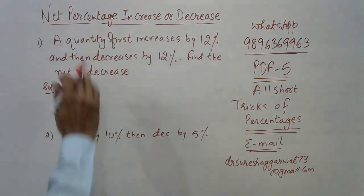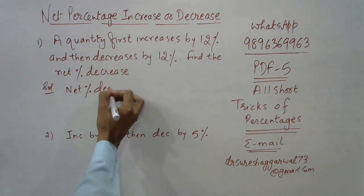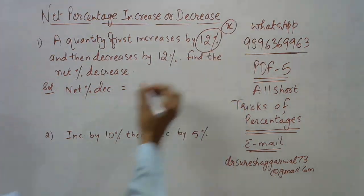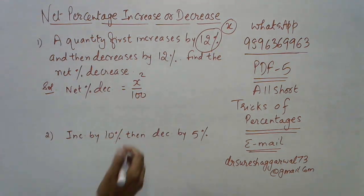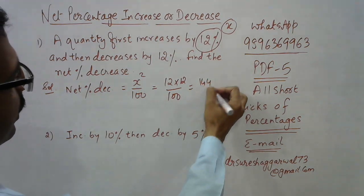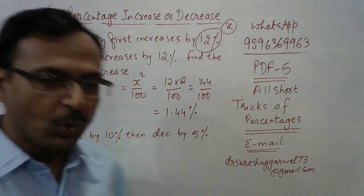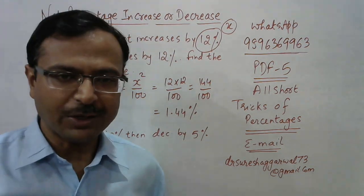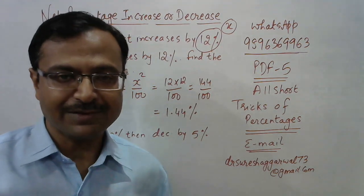Here's the first trick: when a quantity first increases by x percent and then decreases by x percent, the net percentage decrease is simply x² / 100. In this problem x is 12, so it's 12 × 12 / 100 = 144 / 100 = 1.44 percent decrease. No variables, no lengthy equations, no profit-and-loss formulas — you get the answer very easily.